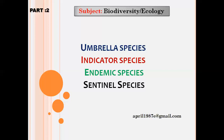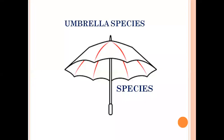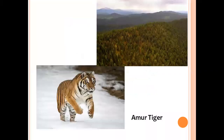To kick things off, let's first look at what is an umbrella species. Look at the picture carefully — I hope it makes sense in a while. To understand umbrella species, I'll use the example of the Amur tiger, which is also formerly known as the Siberian tiger.